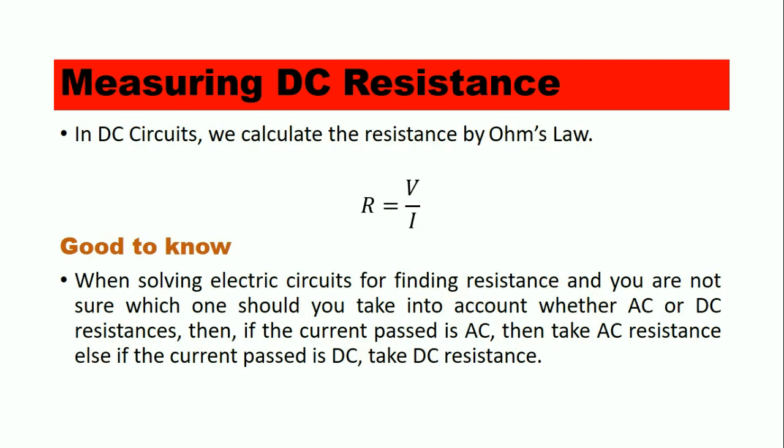When solving electric circuits and you are unsure whether to use AC or DC resistance, the rule is: if the current supply is AC, then consider AC resistance; otherwise, consider DC resistance.